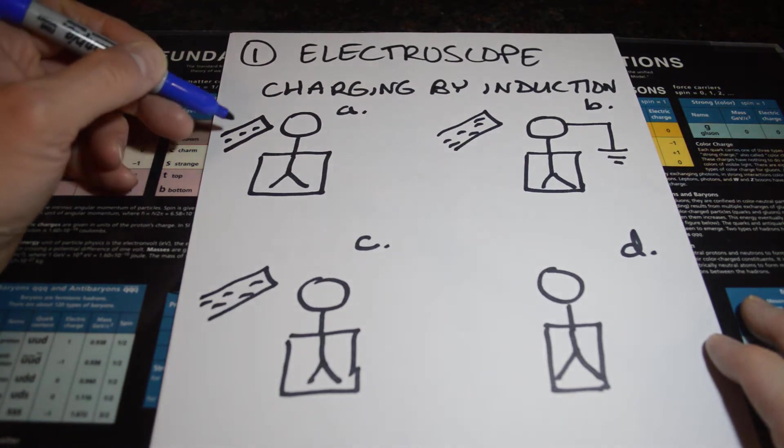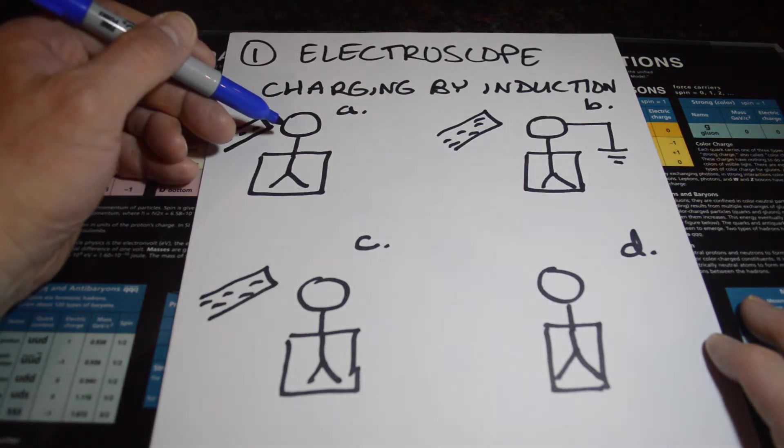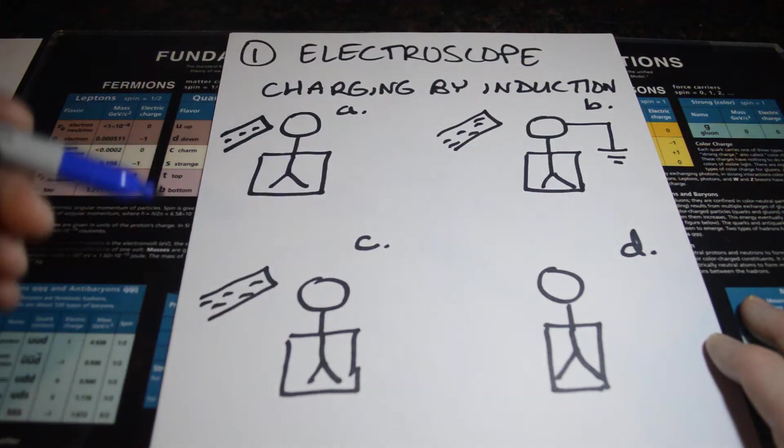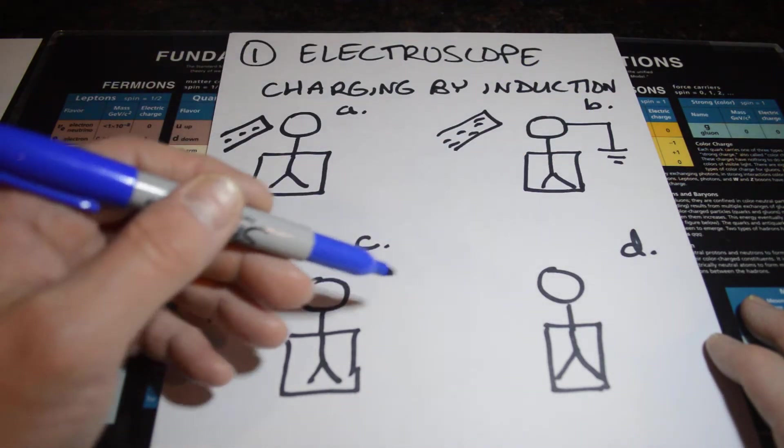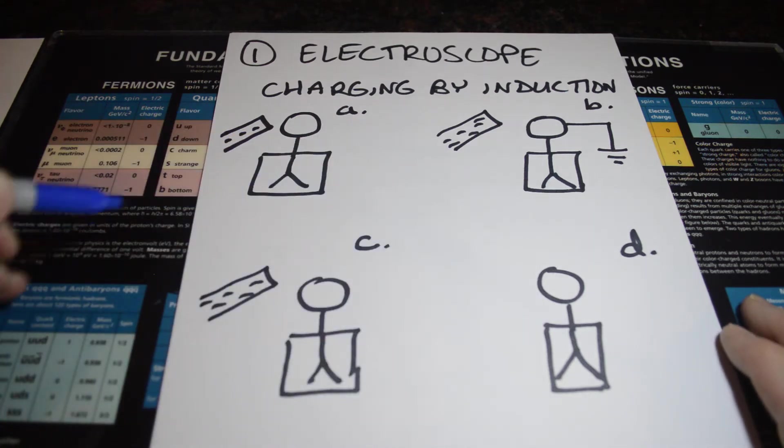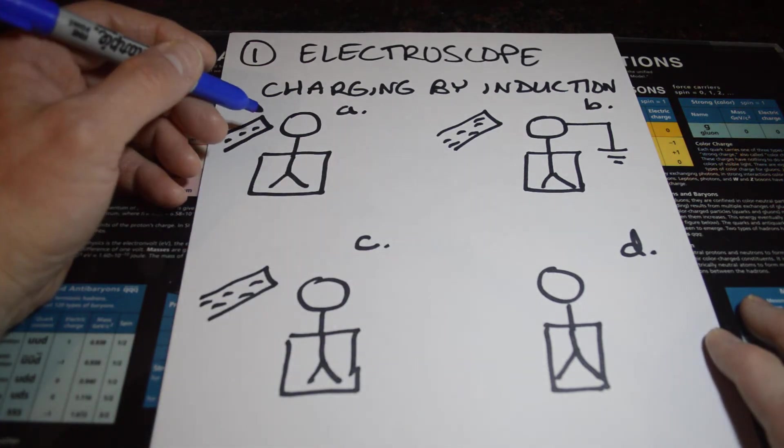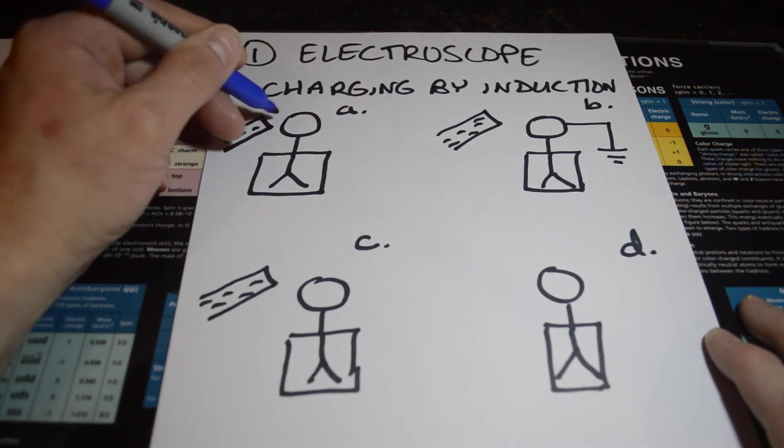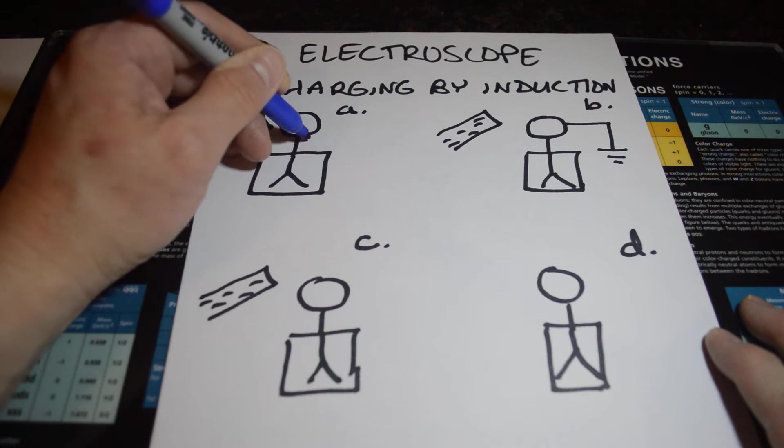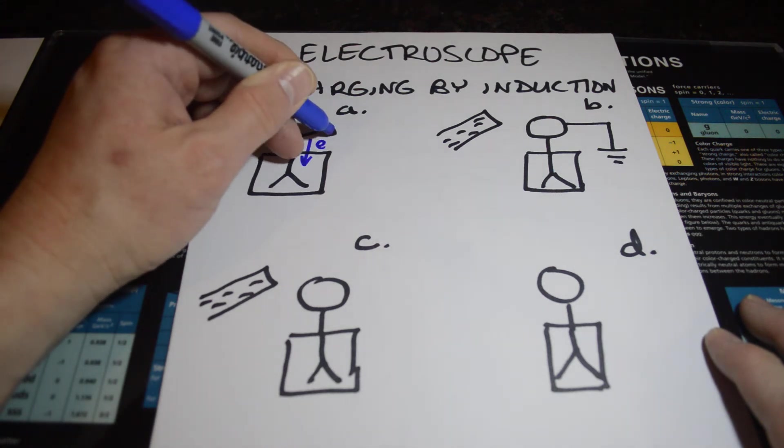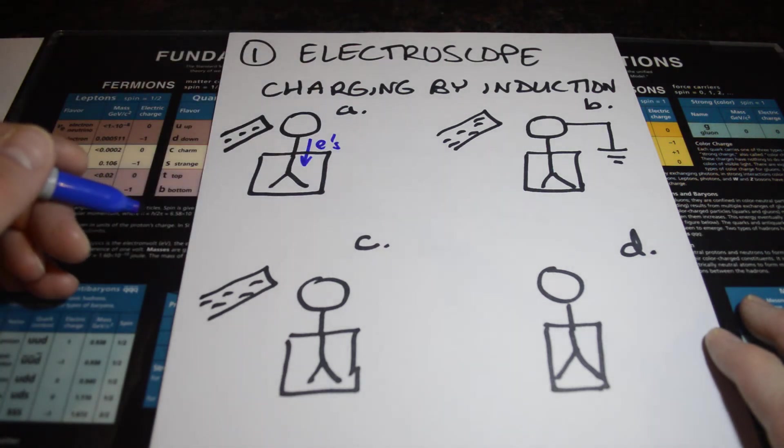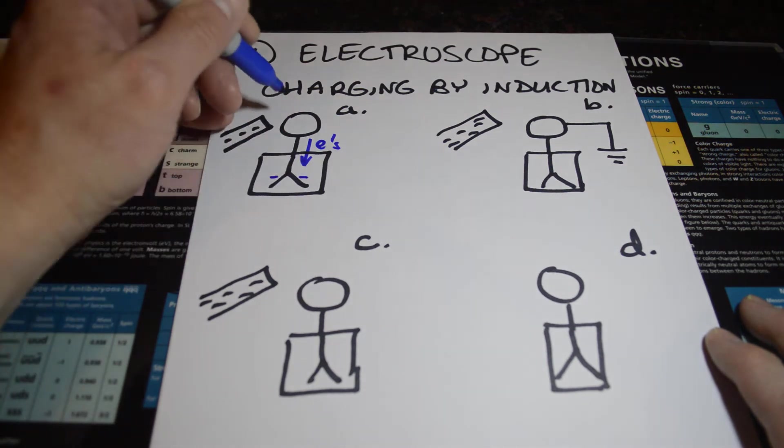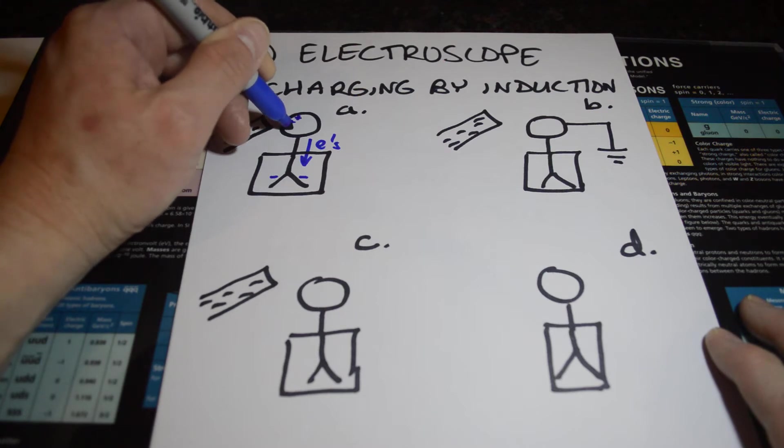So what we have here is a negatively charged rod brought near the electroscope in A. In B, you ground it. C, you take the ground away. And D, you take the rod away. In A, this is going to be one of those situations where the electrons in the knob of the electroscope are probably going to want to go down. So the charges on the electroscope probably want to migrate downward. They're probably going to polarize at the top.